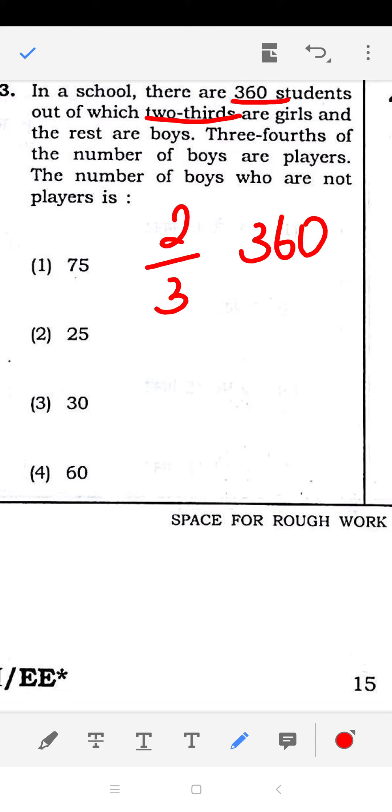Two-thirds are girls. I'll simplify it: 2/3 × 360 equals 2 × 120. When you multiply 2 and 120, you get 240. This is the number of girls.